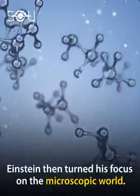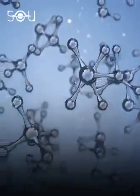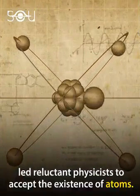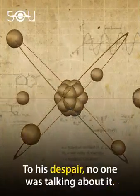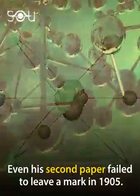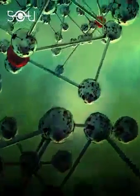Einstein then turned his focus on the microscopic world. His second paper explained Brownian motion, which later led reluctant physicists to accept the existence of atoms. To his despair, no one was talking about it. Even his second paper failed to leave a mark in 1905.